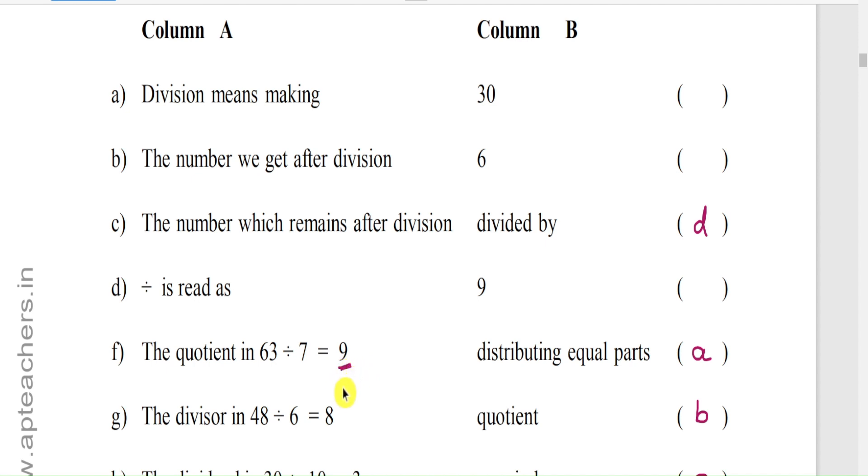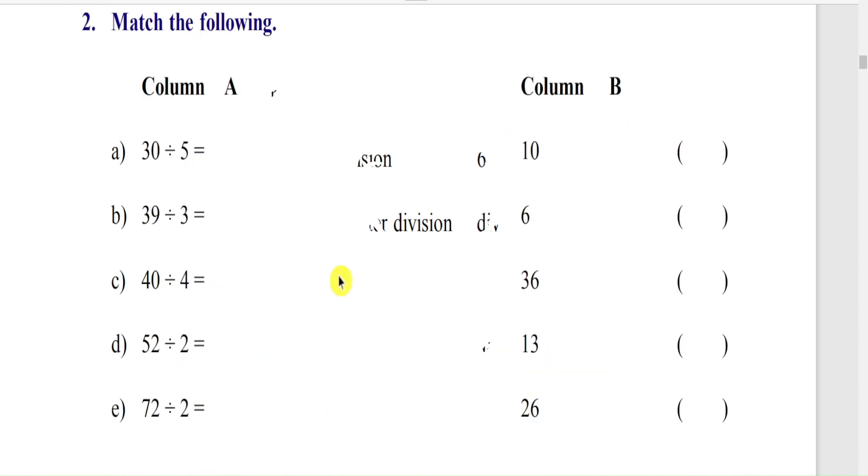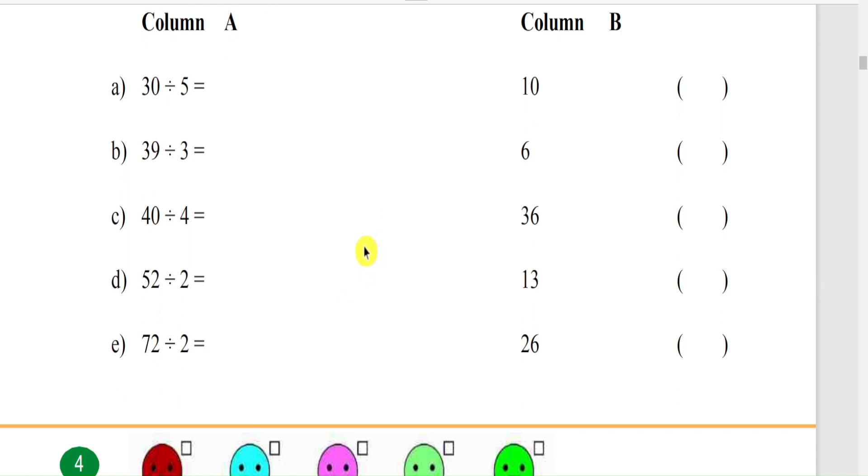The number which is divided by is the divisor. Like in the example: in 48 divided by 6 equals 8, the divisor is 6. So 6 is the divisor.